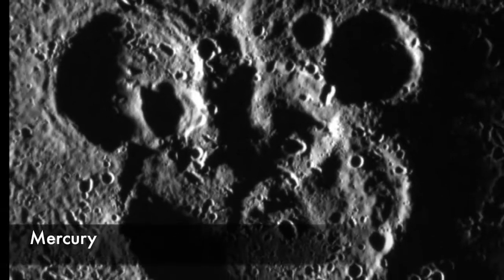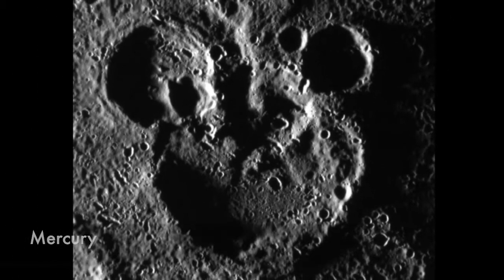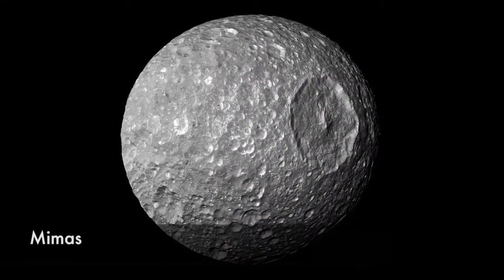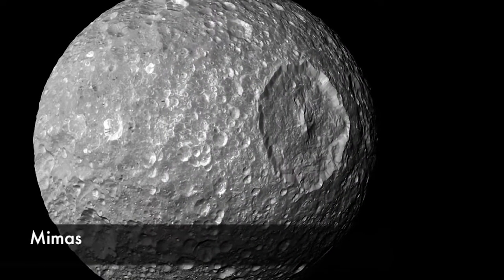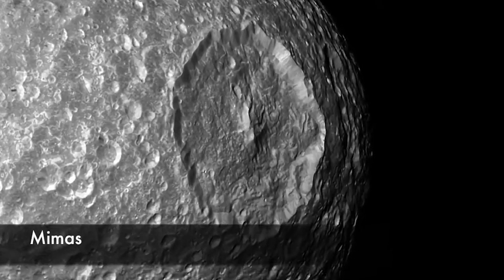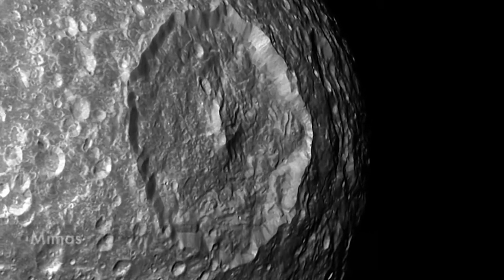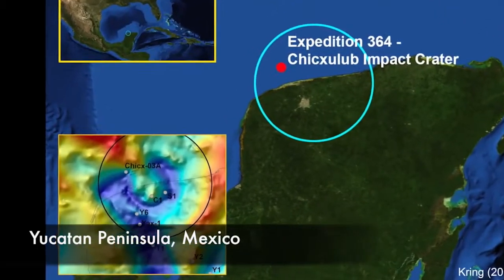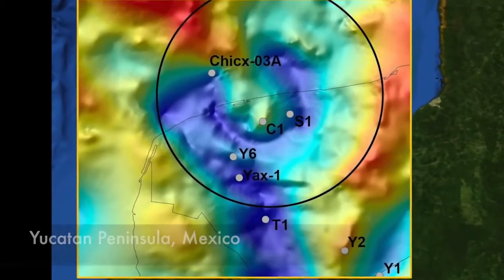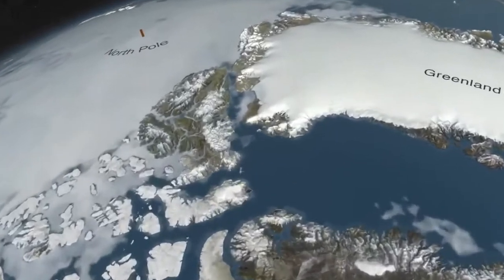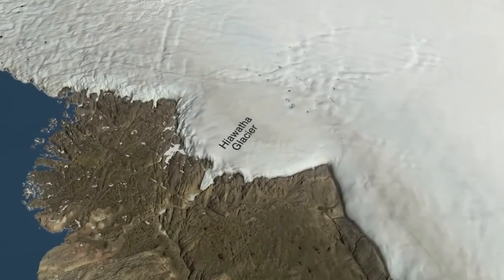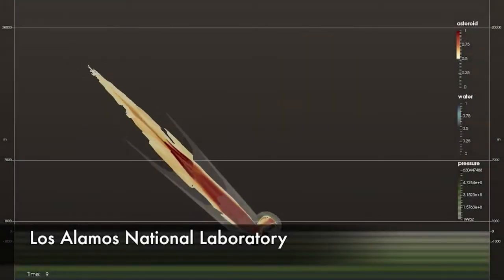Every world in our solar system has been hit, and many still have the craters to show for it. Mimas, a tiny icy moon of Saturn, was hit so hard that it nearly shattered. And, of course, one hit Earth 66 million years ago and killed off the dinosaurs. And just 13,000 years ago, one hit Greenland, possibly changing climate enough to kill off Ice Age mammals and early human cultures.